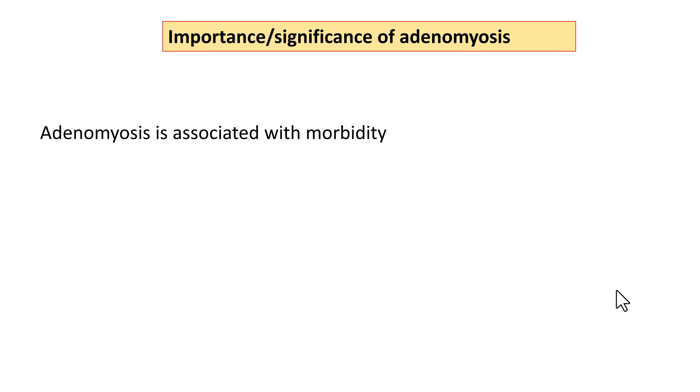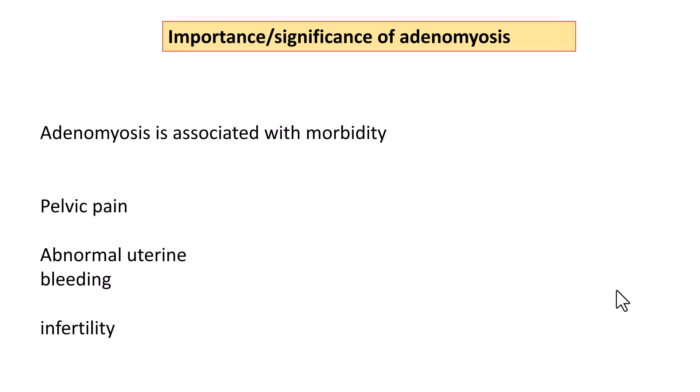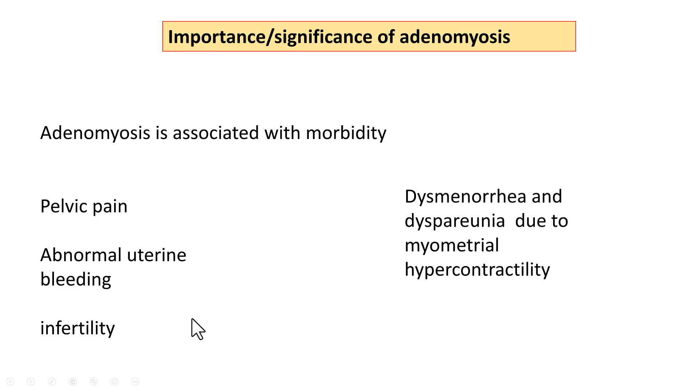The significance of knowing adenomyosis is that it is often associated with morbidity. The most common presenting symptoms are abnormal uterine bleeding, pelvic pain, and sometimes even infertility. There can be dysmenorrhea or dyspareunia, basically because of increased myometrial contractility or myometrial hypercontractility.